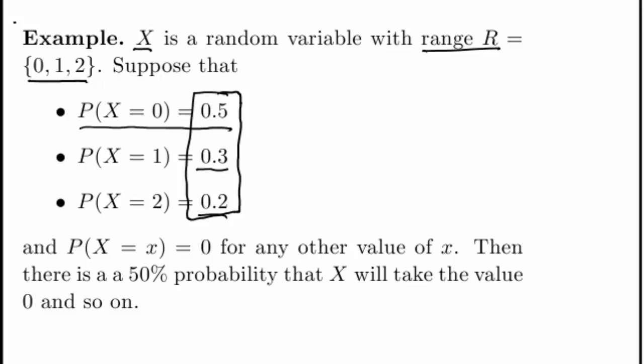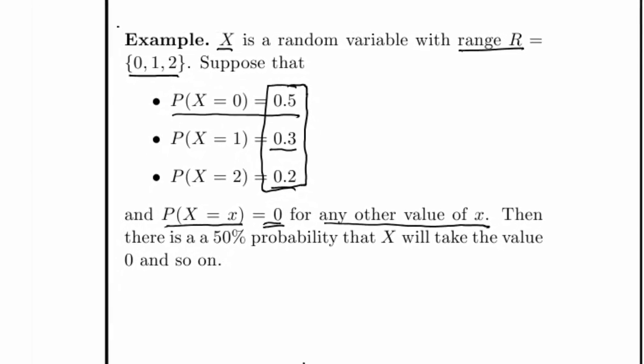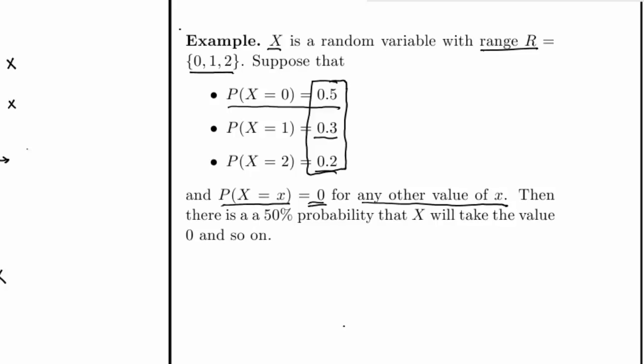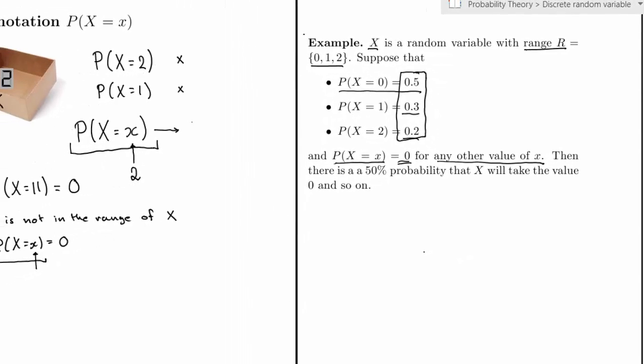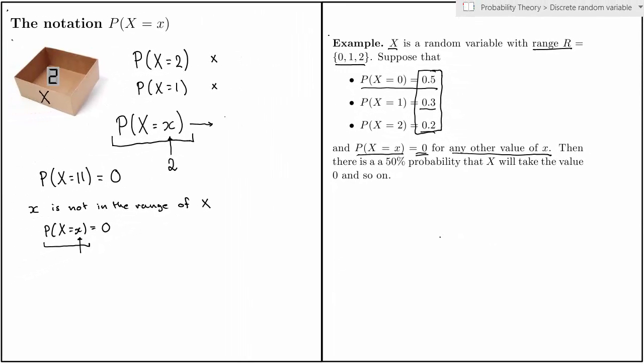Because I will always see a number when I look inside the box. For any other value of x — that is, for any value of x that is not 0, not 1, not 2 — this probability must be 0. The probability that X is 3 is 0. The probability that X is 0.5 is 0, and so on.